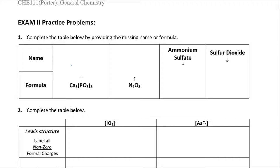This first one is about nomenclature — naming compounds is really important. You've got to keep in mind whether things are ionic or covalent. Here we've got calcium, which is a metal, and this polyatomic group of non-metals, so this is going to be ionic. For ionic naming, we first name the metal — calcium — and then this polyatomic: phosphate is PO4, but this is phosphite because it has a 3 instead of a 4. So this is calcium phosphite.